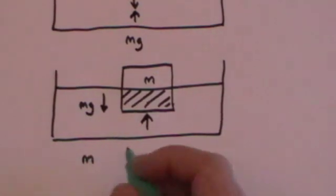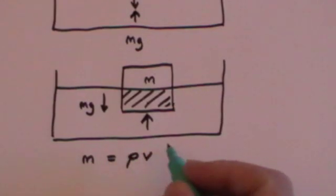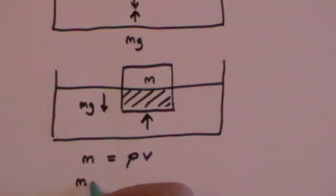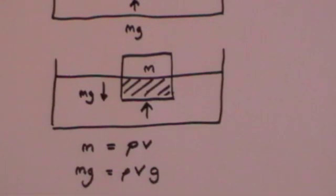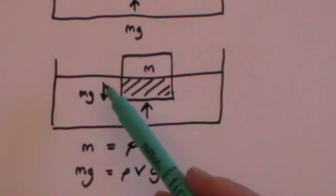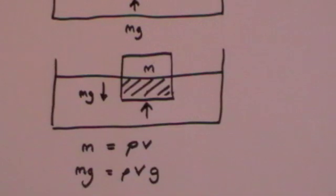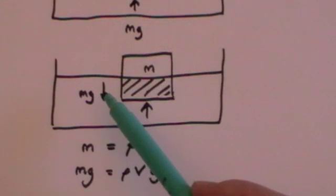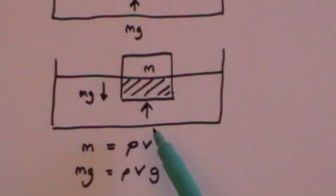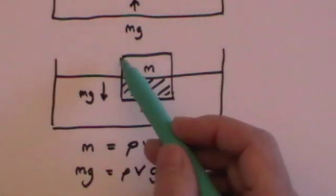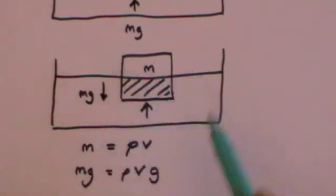The mass of the water displaced is the density times that volume, so the weight of fluid displaced is density times volume times g. Now suppose the weight of the object and the upthrust happen to be equal. That means the weight of the object, which tends to make it sink, is exactly matched by the upthrust — the weight of fluid displaced. If those two things are equal, there is no net force, and therefore no net movement. Consequently, the object will neither go further down nor further up — we call it floating.